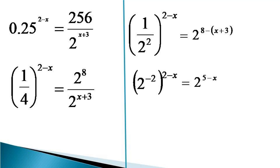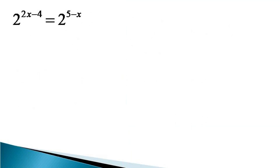On the left hand side, the indices get multiplied and it becomes 2 raised to the power (minus 2 times (2 minus x)), which equals 2 raised to the power (5 minus x). This is further simplified and the left hand side becomes 2 raised to the power (2x minus 4), equal to 2 raised to the power (5 minus x). Since the bases are equal on both sides, the indices also must be equal, so we get 2x minus 4 equals 5 minus x.